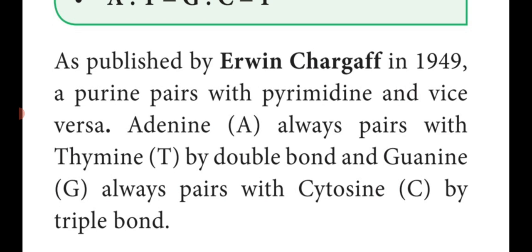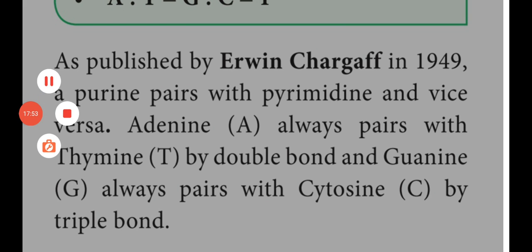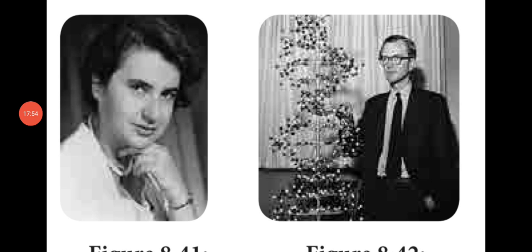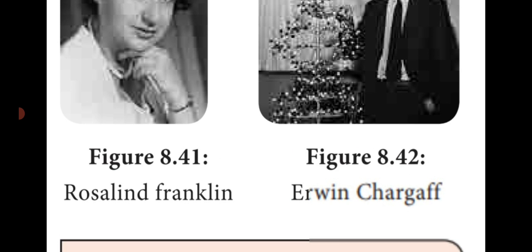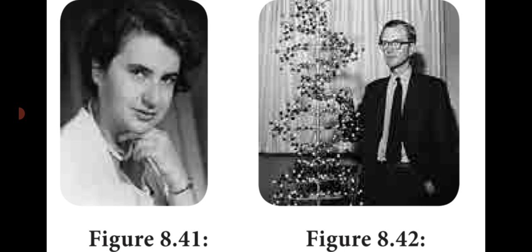Purine pairs with pyrimidine and pyrimidine pairs with purine. Adenine (A) always pairs with thymine (T) by a double hydrogen bond. Guanine (G) always pairs with cytosine (C) with three hydrogen bonds or a triple bond. Erwin Chargaff proposed this Chargaff rule. The first diagram shows Rosalind Franklin, who first made the crystallography model of DNA. The second is Erwin Chargaff, who proposed the Chargaff rule.